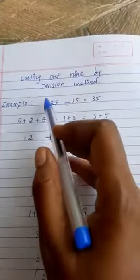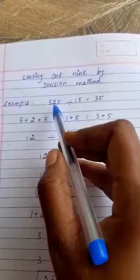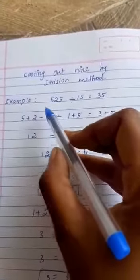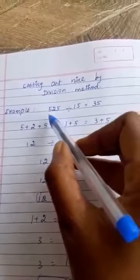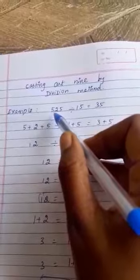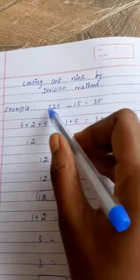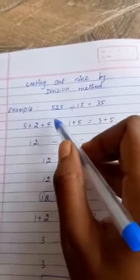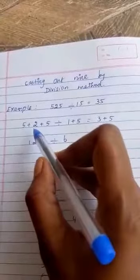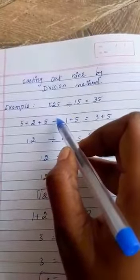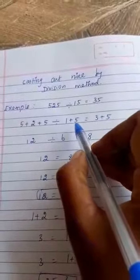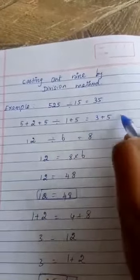Already you know that if the sum of numbers equals 9, we cast out the numbers. But here when we add the numbers, it is not 9. So I split up 525 into separate numbers: 5 plus 2 plus 5, divided by 1 plus 5, equals 3 plus 5.